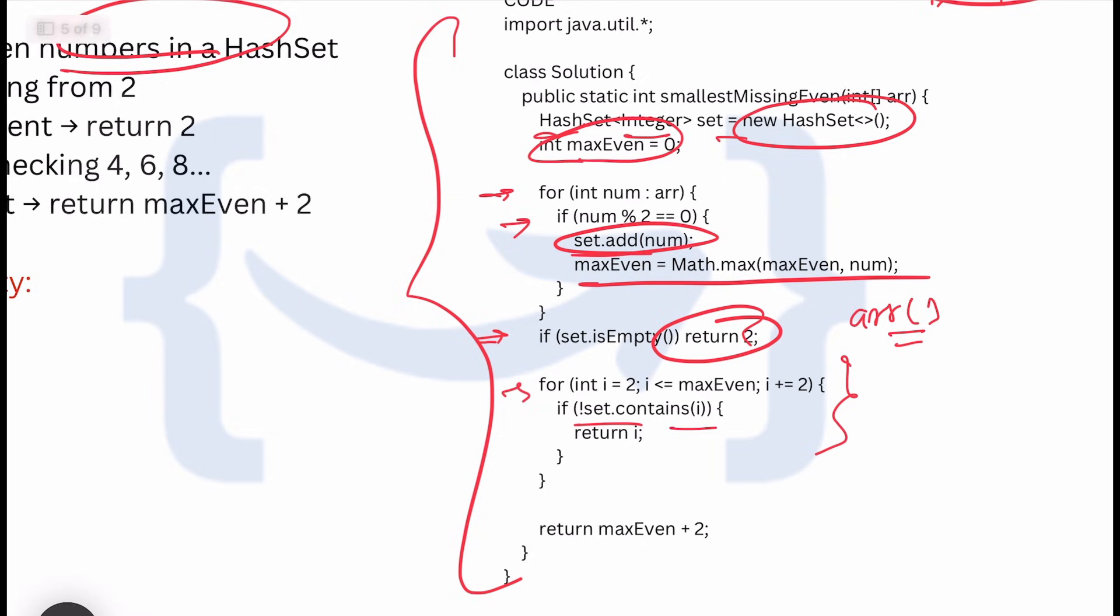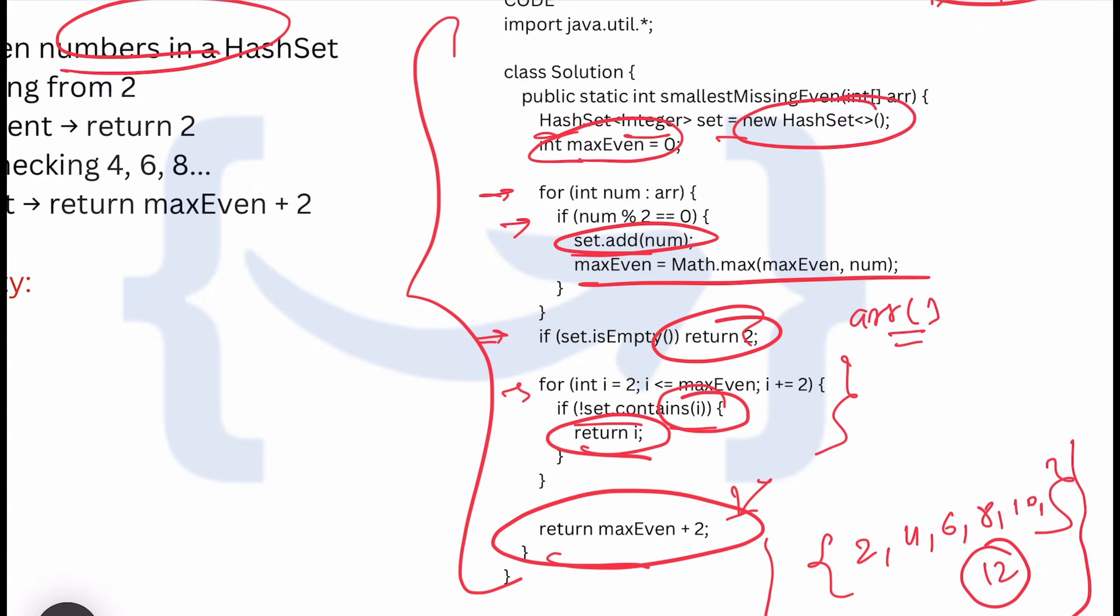For int i equals 2, i less than maxEven, we start checking for each element. If set doesn't contain i, return i. maxEven plus 2 is the last edge case. As the question states, if all max even numbers are present, the next even number is the missing one. If an array has 2, 4, 6, 8, 10, all even numbers are there, so the missing even number would be 12.